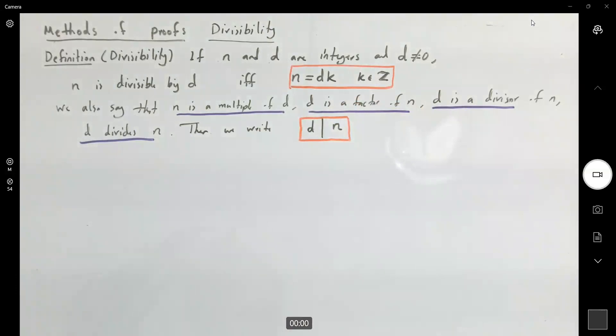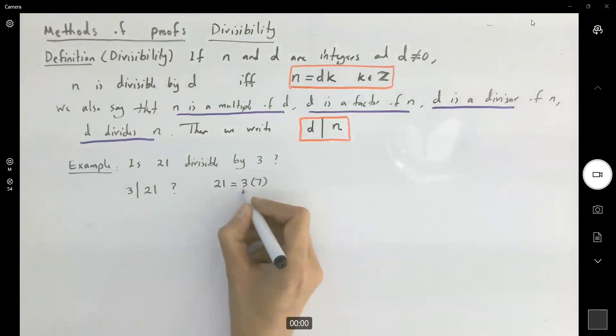You saw divisibility in algebra, for example, is 21 divisible by 3? Of course, 21 can be written as 3 times 7. So 3 is your d and 7 is your k.